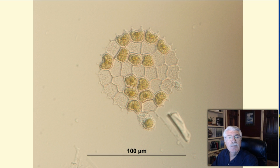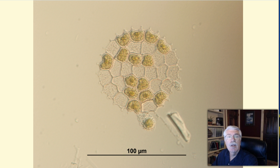To do this, the phytoplankton must obtain energy through the process of photosynthesis by living in the well-lit surface layer of the water. This is termed the euphotic zone, where 'eu' means true and 'photic' means light — euphotic zone.